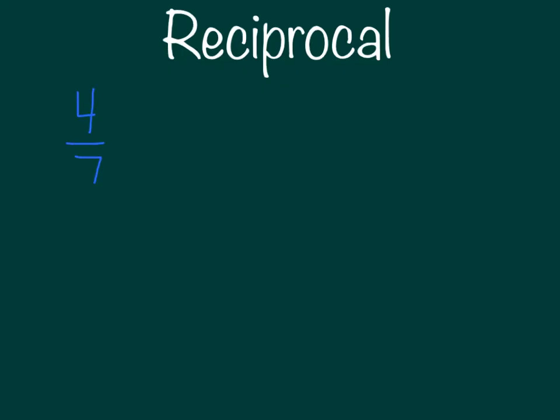Can you find the reciprocal of four-sevenths? Four-sevenths times seven-fourths gives us twenty-eight twenty-eighths, or just one. So basically we're just flipping the fraction that we have in order to find its reciprocal.